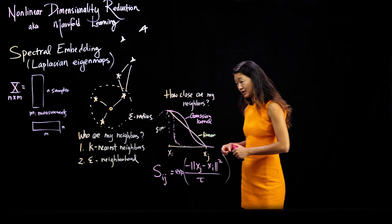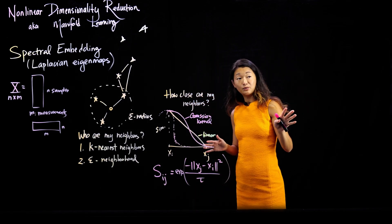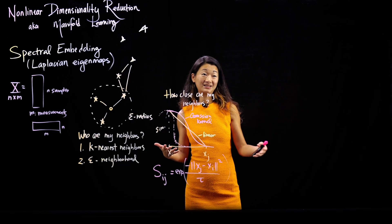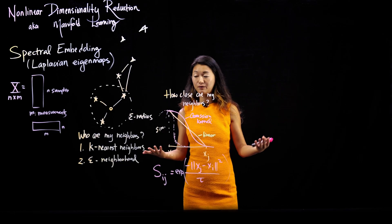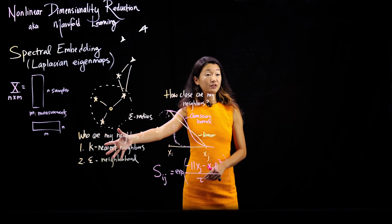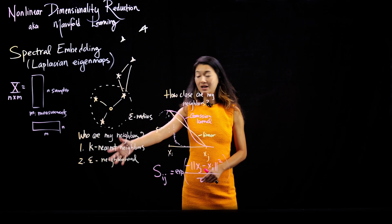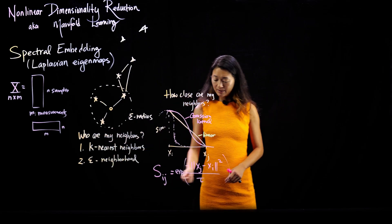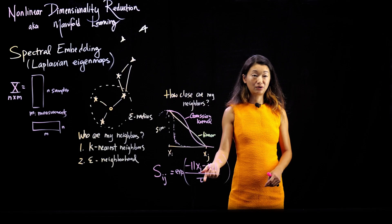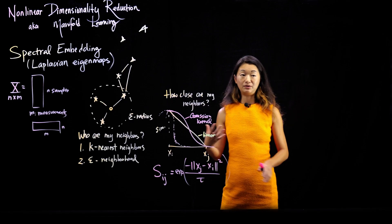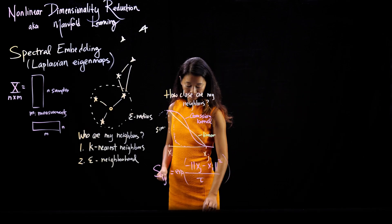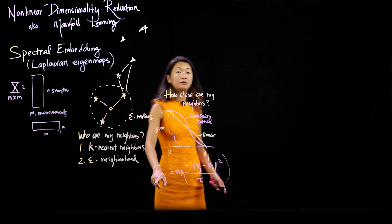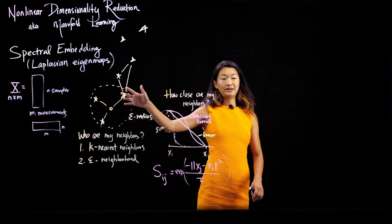So as I counted, there are now approximately two parameters that we have to make a decision on. You have to decide which of these algorithms you're going to use for counting who is your neighbor — either pick a k or pick an epsilon. And then you have to pick the wideness of your Gaussian kernel for computing this similarity matrix. Now that we have the similarity matrix, we're going to keep going with spectral embedding.